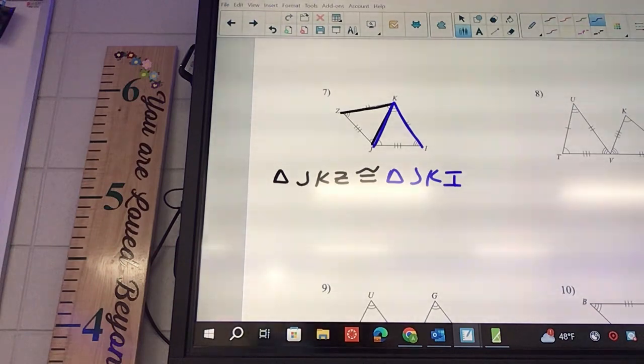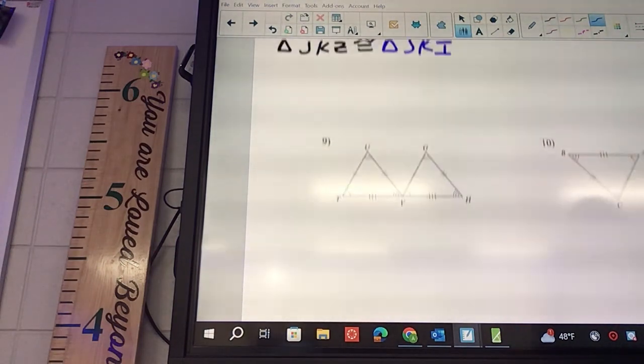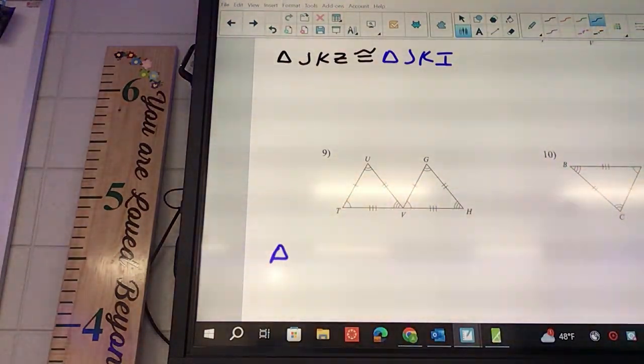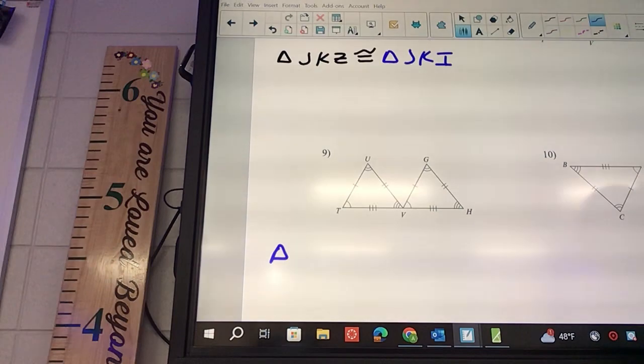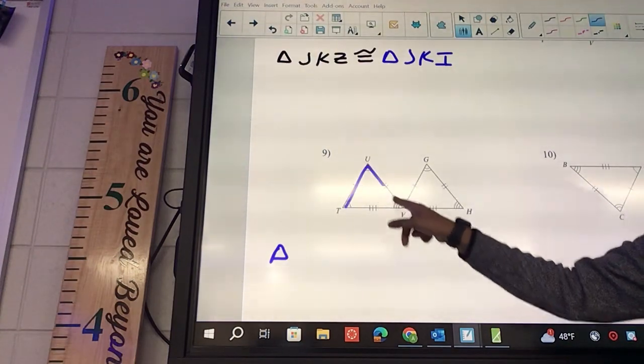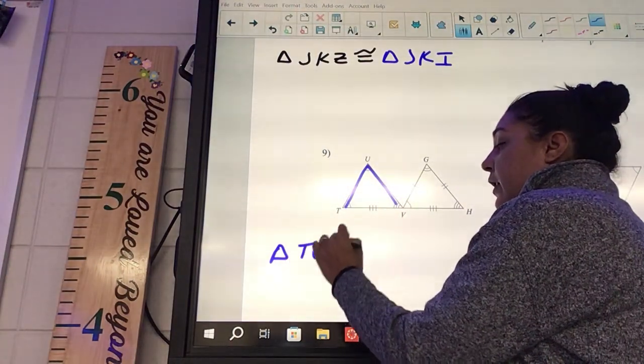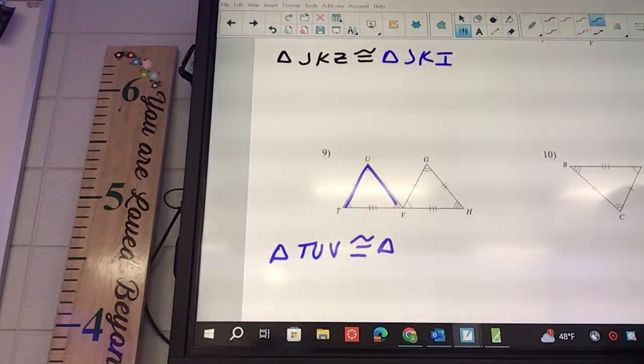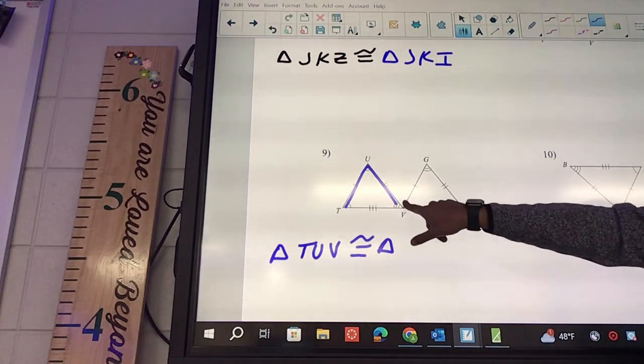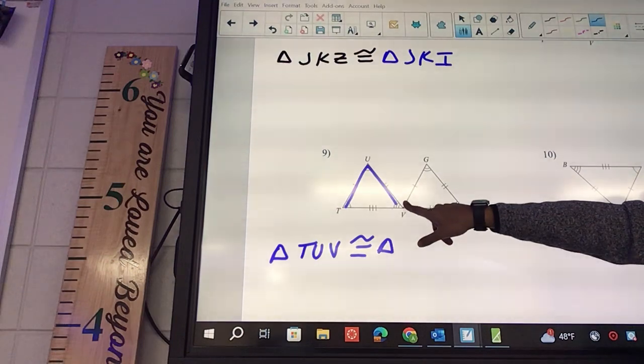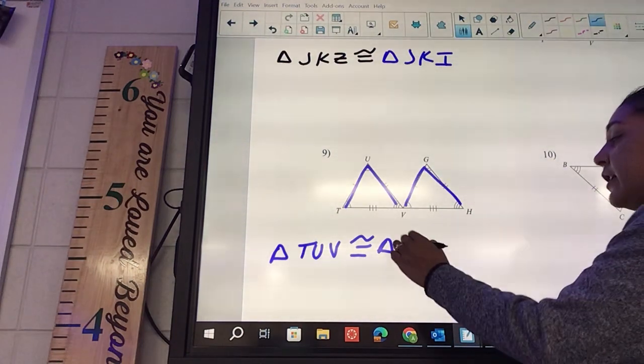Number nine. Triangle - what's coming first on the very first one? What's coming first? T to what? U to V. TUV is congruent to triangle. What about the second one? V to what? H or G? G. G to H. So VGH.